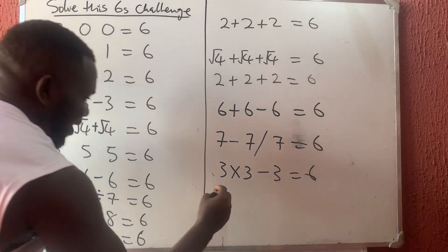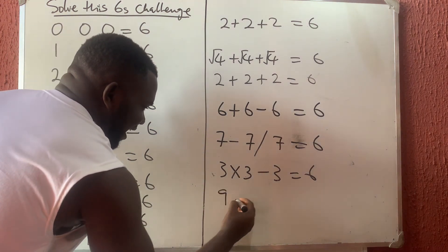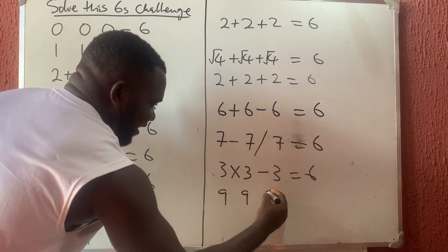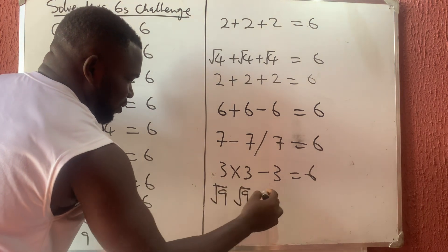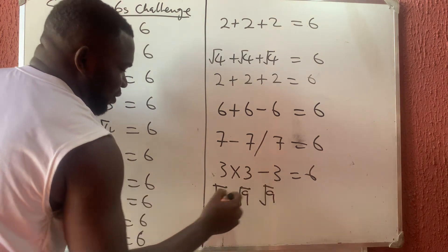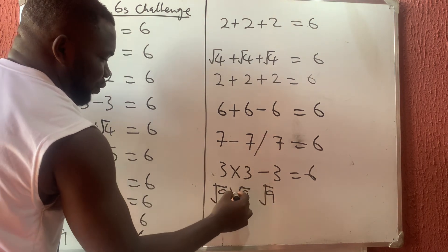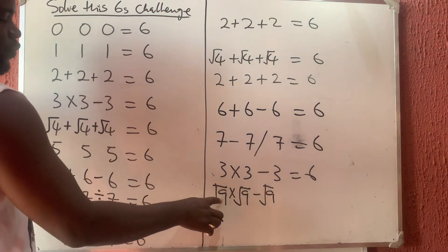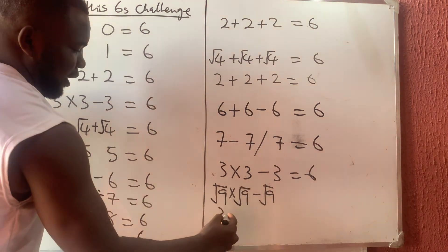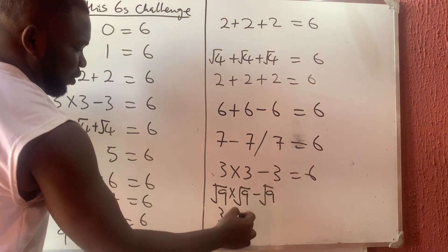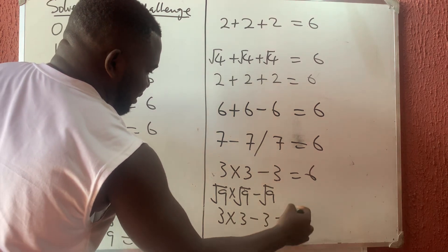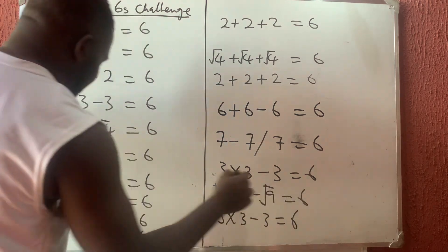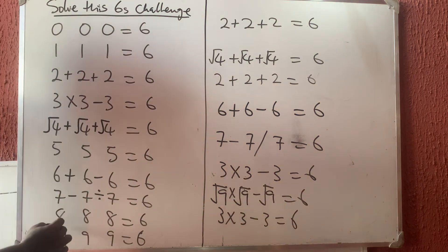That helps us solve nine, nine, nine. I cap them with square roots: square root of nine times square root of nine minus square root of nine gives three times three minus three, which equals six. So for nine, nine, nine: square root times square root minus square root.